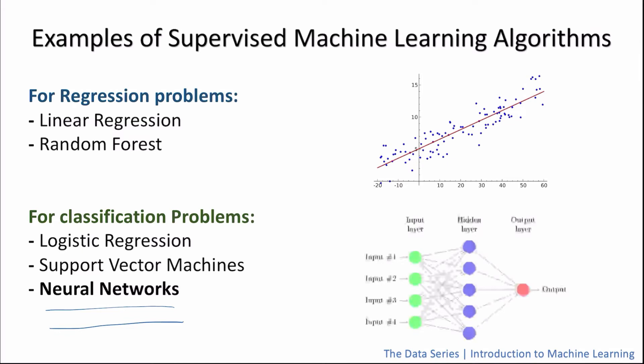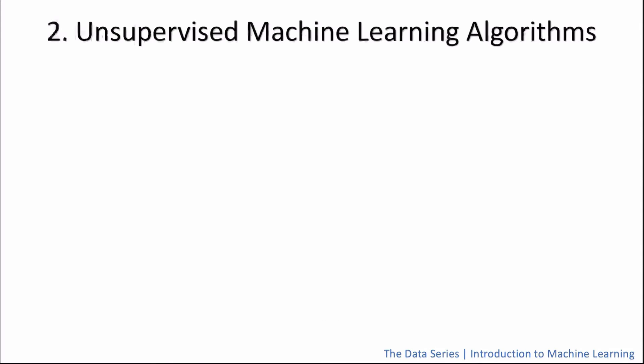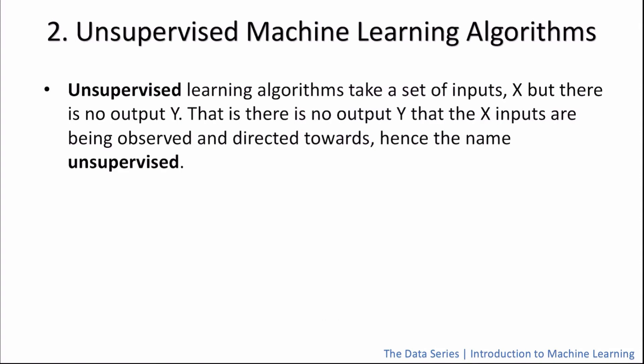Let's now take a look at the second category of machine learning algorithms, which are unsupervised machine learning algorithms. Unsupervised machine learning algorithms take a set of inputs x but there is no output y, which is the key differentiating factor between unsupervised machine learning algorithms and supervised machine learning algorithms. That is, that there is no output y that the x inputs are being observed and directed towards, hence the name unsupervised.